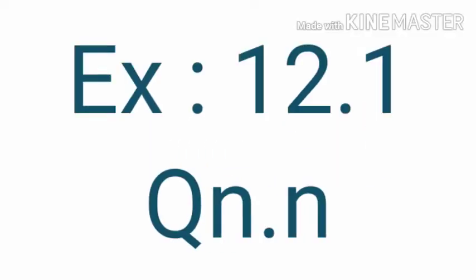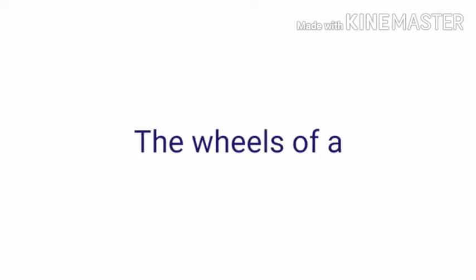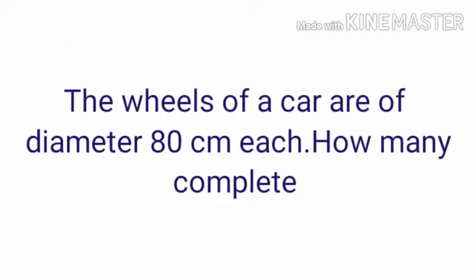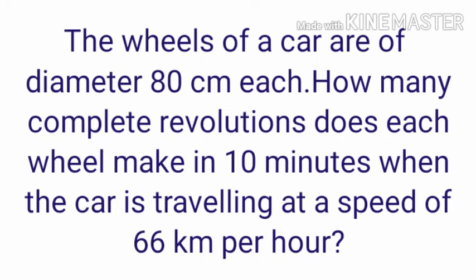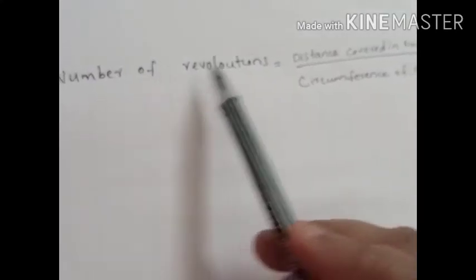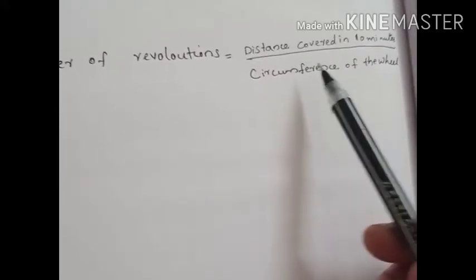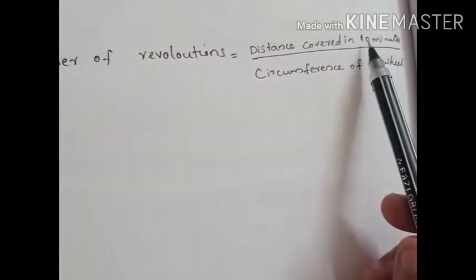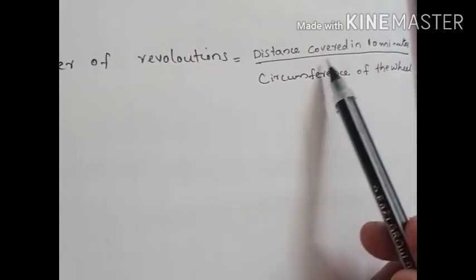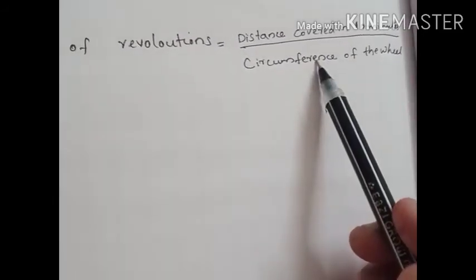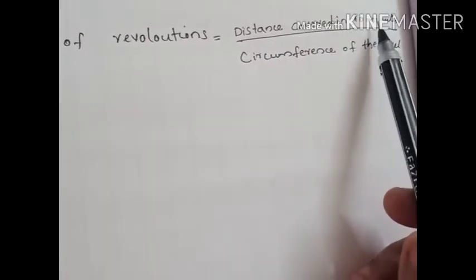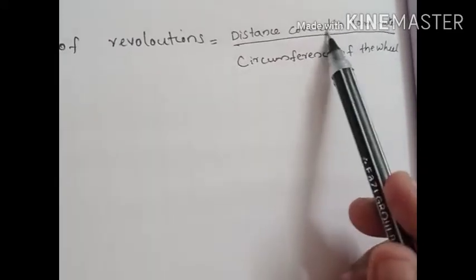Now, Exercise 12.1, Question number 4. The wheels of a car are of diameter 80 cm each. How many complete revolutions does each wheel make in 10 minutes when the car is travelling at a speed of 66 km per hour? We have to find the number of revolutions. For that, we use: number of revolutions equals distance covered in 10 minutes divided by circumference of the wheel.